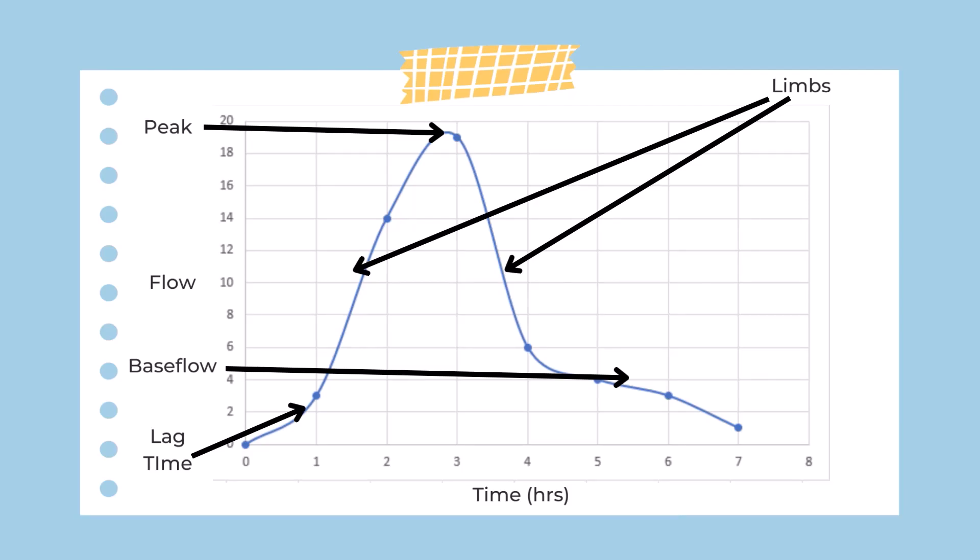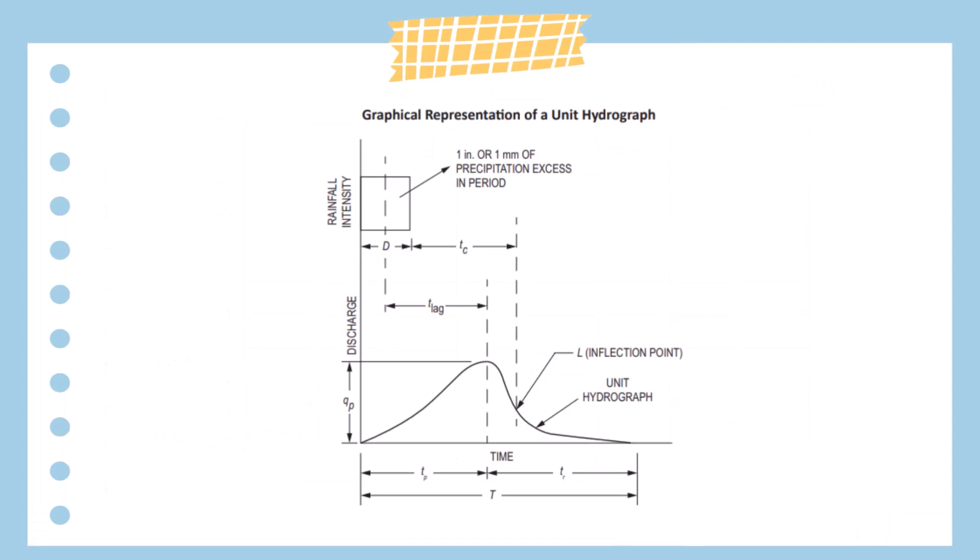We also want to identify the base flow of the graph, which can be seen when the graph begins to increase and then down to where it gradually decreases. We can draw a line identifying the base flow. The lag time would be the difference between that peak and the initial runoff. You can see another diagram here of a graphical representation of the unit hydrograph with the lag time and time of concentration being identified.